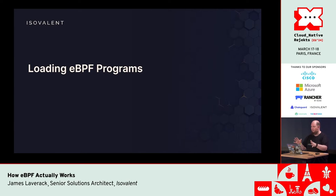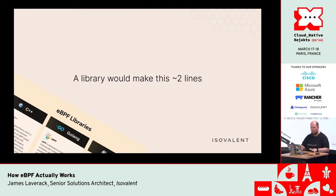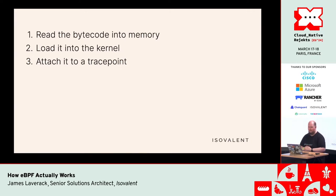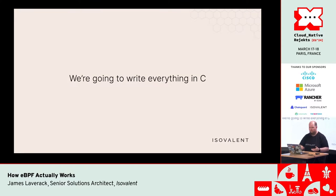So we've compiled some code and that's what we got out. Let's actually load it into the kernel and do something useful with it. Again, a library would make this two lines. We really are doing this the hard way, so don't do what I'm doing if you're really trying to do eBPF. We need to do three things: get it into memory, get it into the kernel, and then tell the kernel to do something with it. We're going to write everything in C because it's slightly easier to interact with syscalls this way.